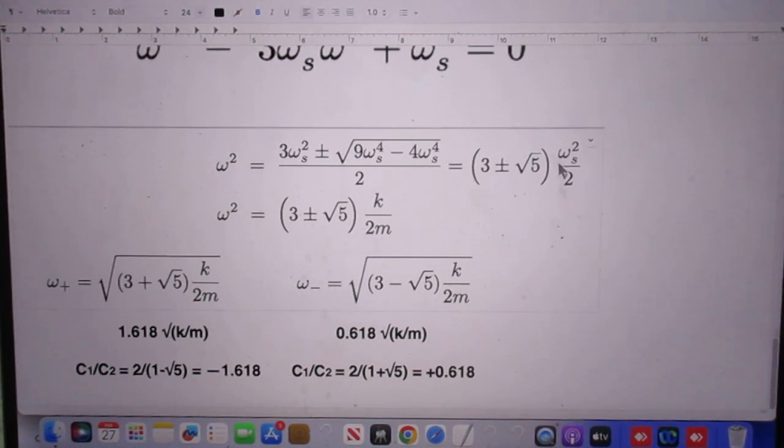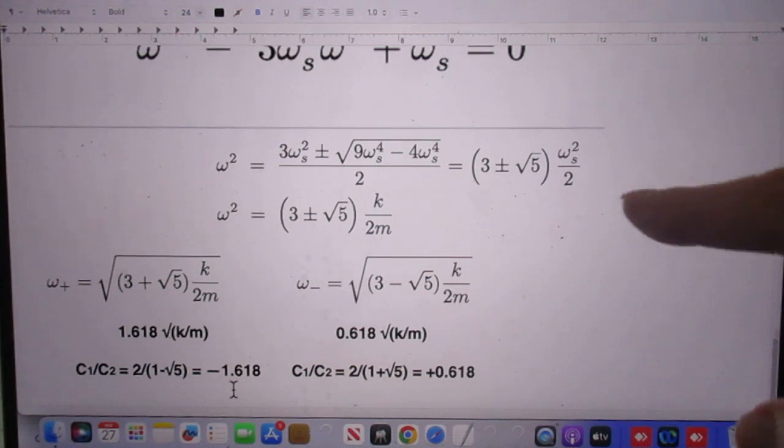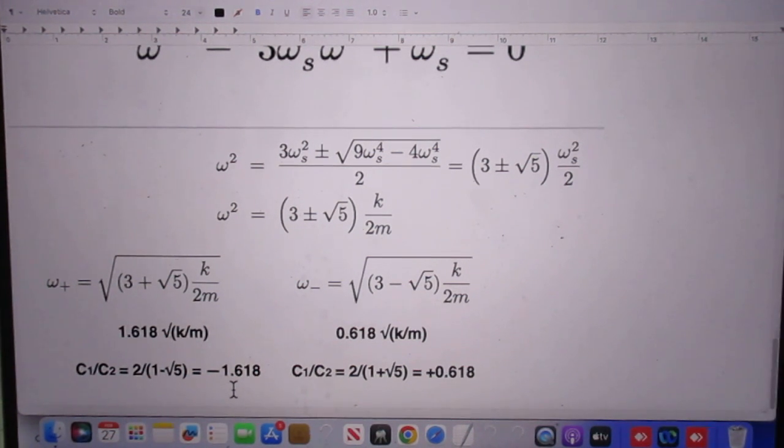If now you go back to your equations to solve for C1 over C2, you'll find that indeed in the highest frequency, it has a minus sign because they're going in opposite direction. In the lowest frequency, it is a plus sign.